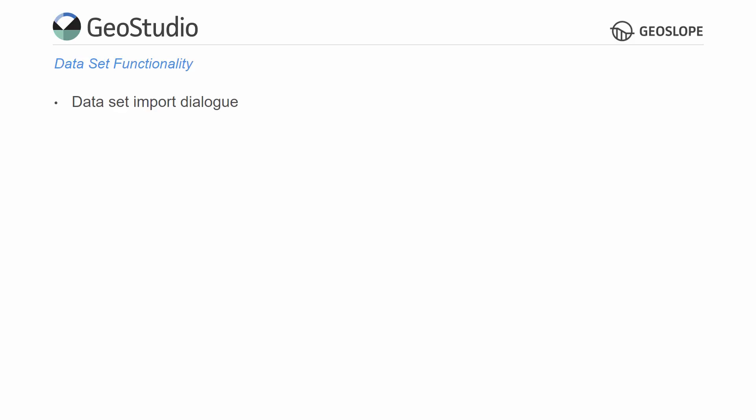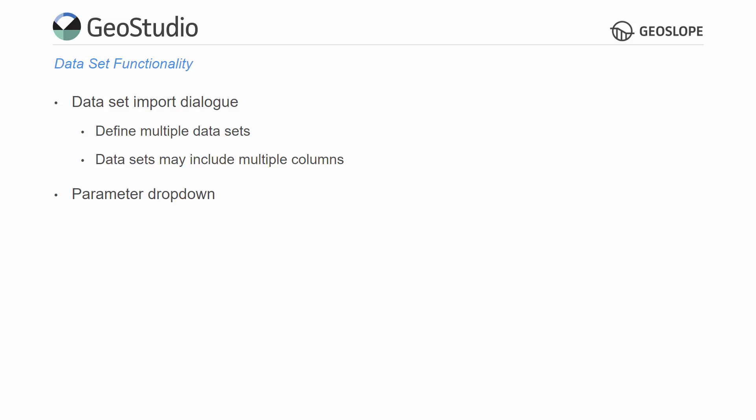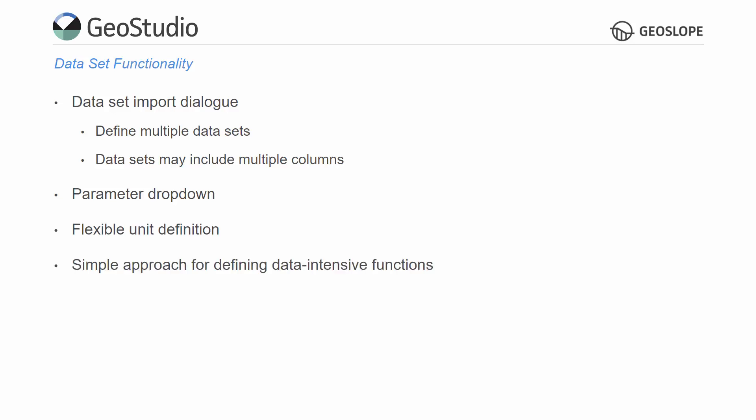In GeoStudio, datasets may be defined with the new Dataset Import dialog. This dialog allows for the easy definition of datasets which may include multiple columns of data. The parameters associated with each column may be selected from a drop-down list, as well as the units of each parameter. Importing datasets is the preferred approach for defining functions comprised of significant amounts of data points, which is often the case with field data collected by a data logger.